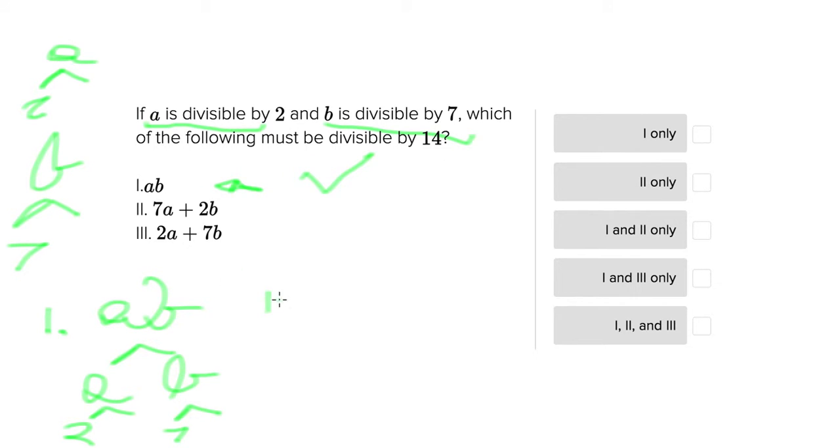Let's go ahead and try Roman numeral 2. So for Roman numeral 2, we would have 7a plus 2b. So here we'd have as factors 7 and a, and we know that a has as factors at least 2. So we multiply the numbers at the lowest level of each of the levels of this pyramid and we end up with 7 and 2, which is 14. So 7a is divisible by 14.